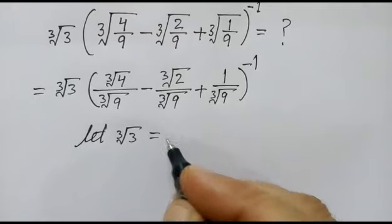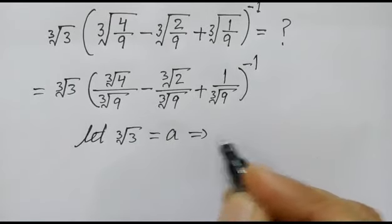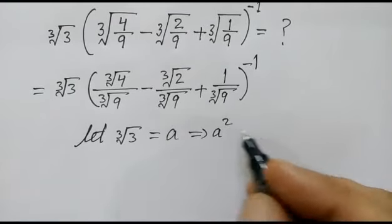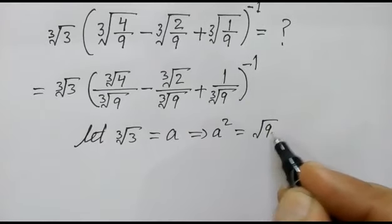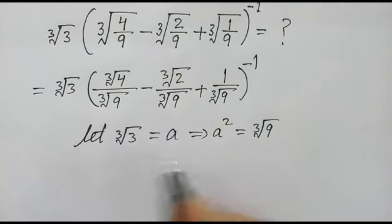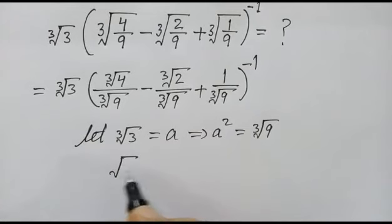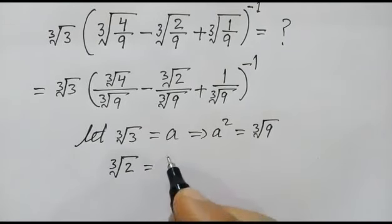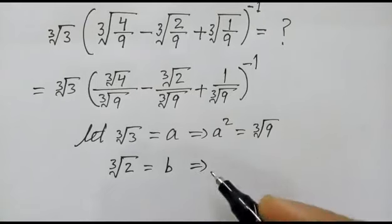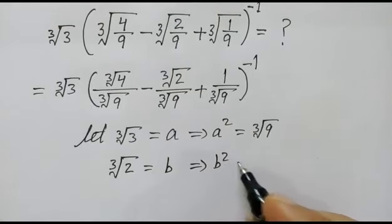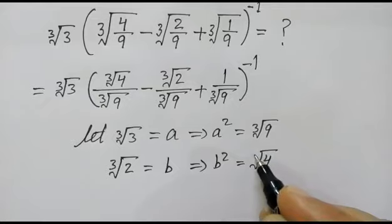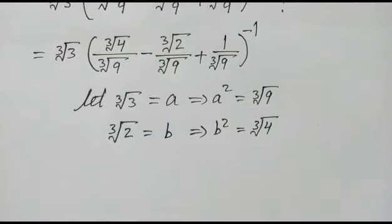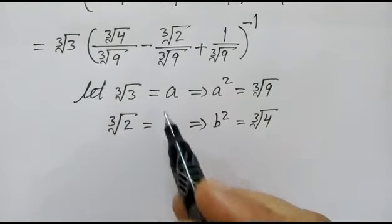So a squared will be equal to cube root of 9. And cube root of 2 is equal to b, so b squared will be equal to cube root of 4.